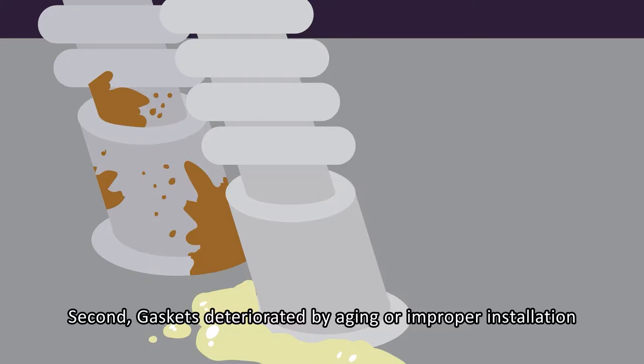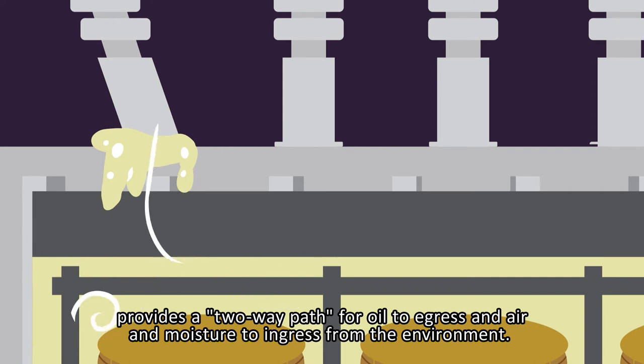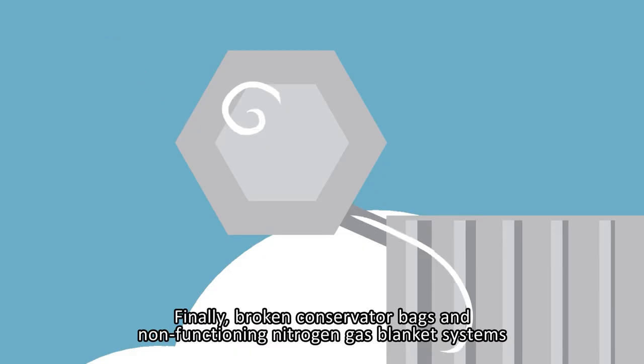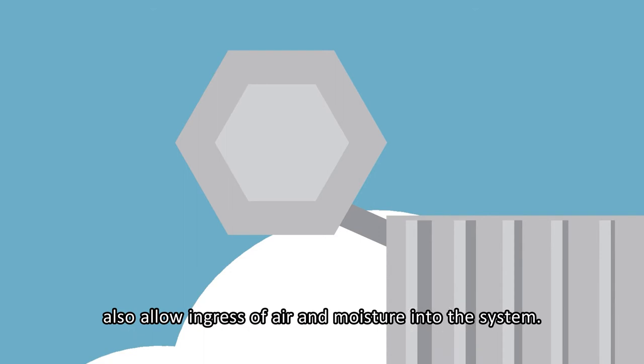Second, gaskets deteriorated by aging or improper installation provide a two-way path for oil to egress and air and moisture to ingress from the environment. Finally, broken conservator bags and non-functioning nitrogen gas blanket systems also allow ingress of air and moisture into the system.